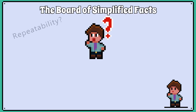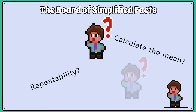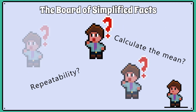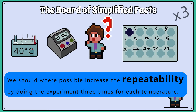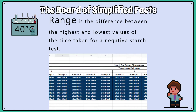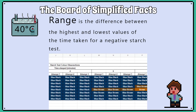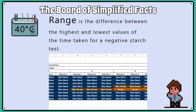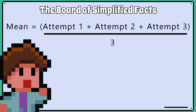Another thing to consider is what are some good practices we can do regarding collecting data. Where possible, increase the repeatability by doing the experiment three times for each temperature. If the range between repeats is small, then this also suggests our data is repeatable and it demonstrates precision. We can then calculate a mean.